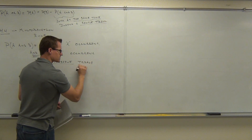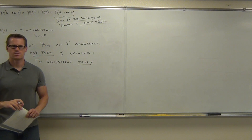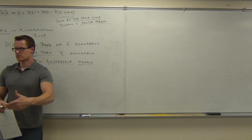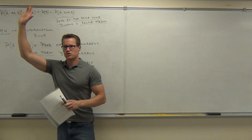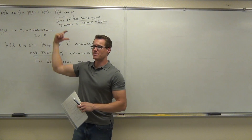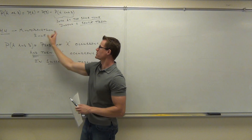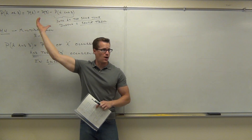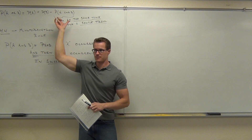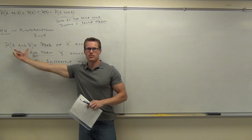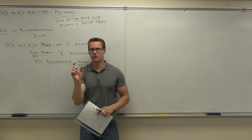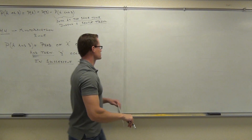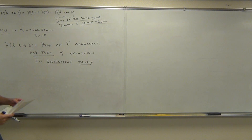Successive means right after each other. So while we have two 'ands,' they mean two different things — same word, two different things. In the context of an 'or' problem, the 'and' means at the same time. In the context of a multiplication rule 'and' problem, those trials are one right after another — A and then B happening.